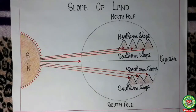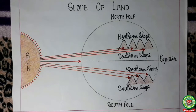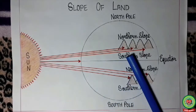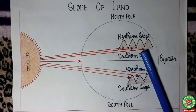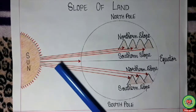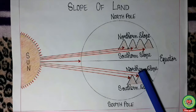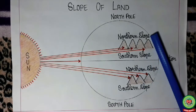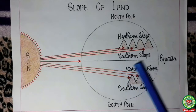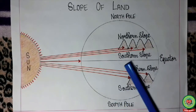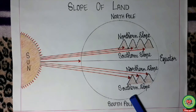The next factor is slope of the land. Sun rays fall directly on the southern slope of mountains in the northern hemisphere, and on the northern slope in the southern hemisphere. This means that in the northern hemisphere the southern slopes are warmer than the northern slopes, and in the southern hemisphere the northern slopes are warmer than the southern slopes.